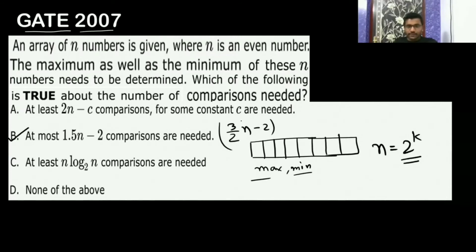Is it clear? Anyone having any doubt? See, we have seen when n is even, then in method 2 algorithm and method 3 algorithm, by using those we have seen that to find the maximum and minimum of the array.